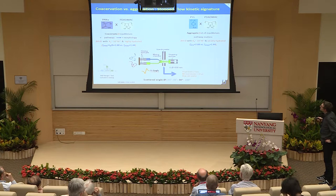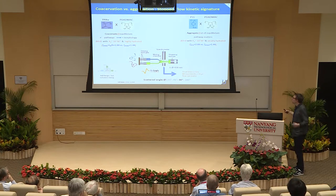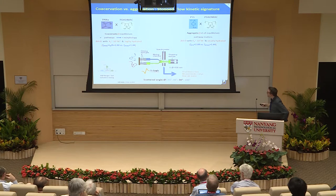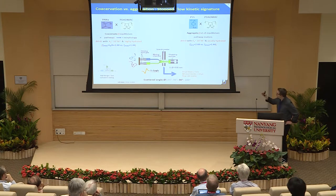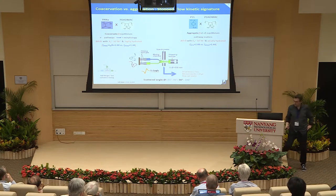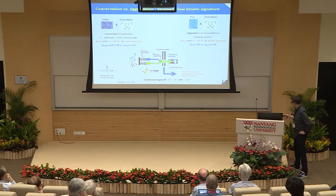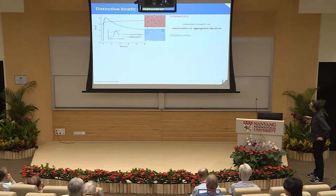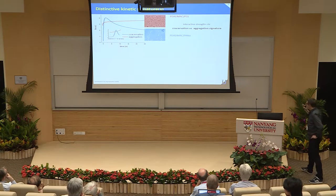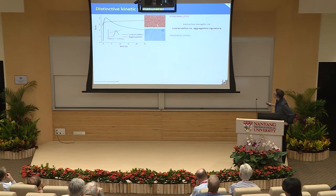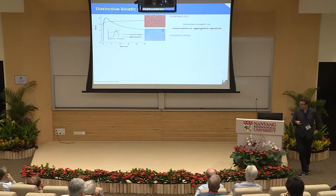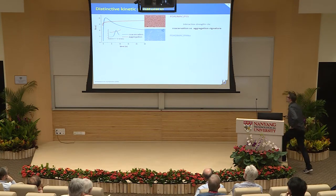It's possible to get a structural signature of coacervation versus aggregation. For that, we use a fast-mixing device where you can mix two polyelectrolytes very fast, in the range of milliseconds. Afterwards, you can follow the assembly kinetics at a very small sampling rate, around 20 microseconds, using light scattering at 90 degrees. Using stop-flow, we see a clear different signature between aggregation and coacervation — these are optical images.